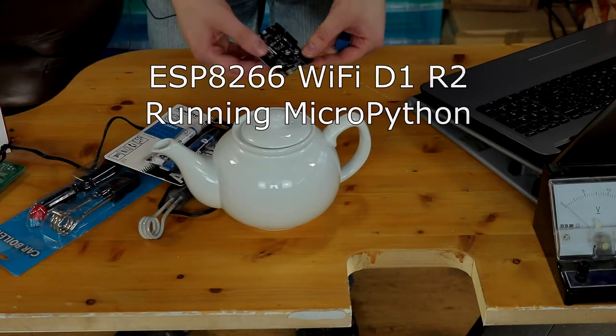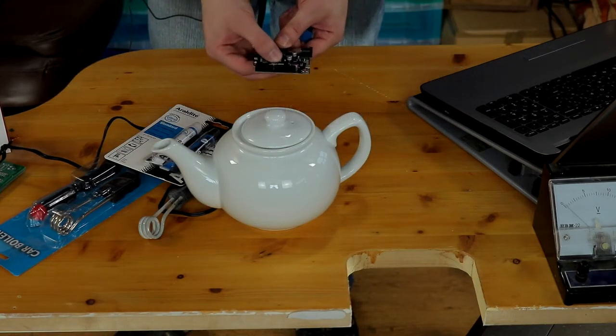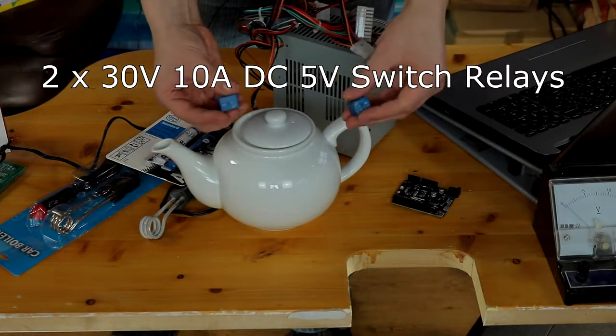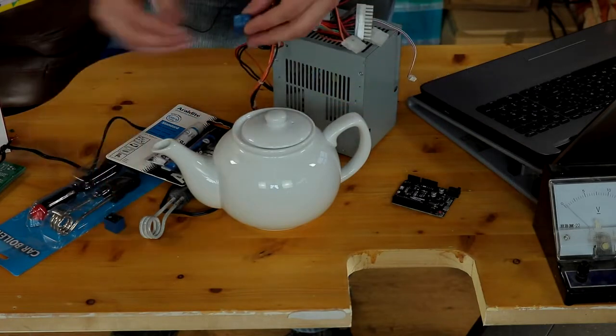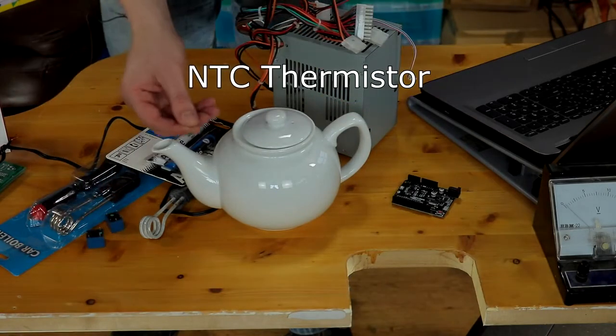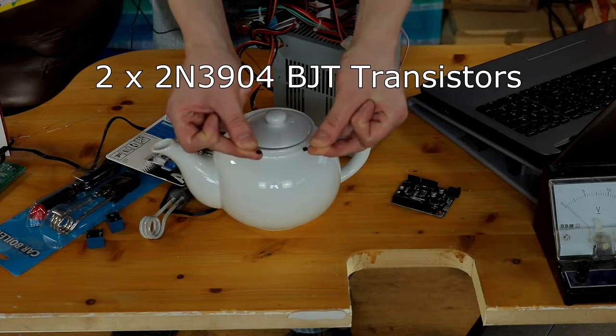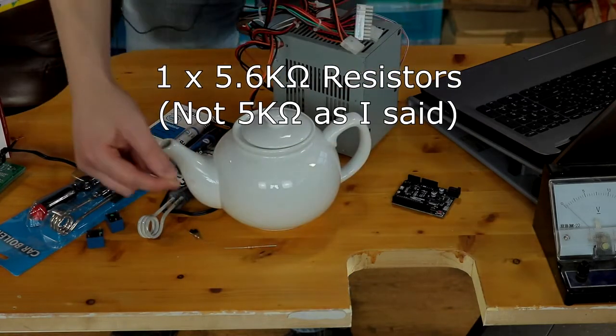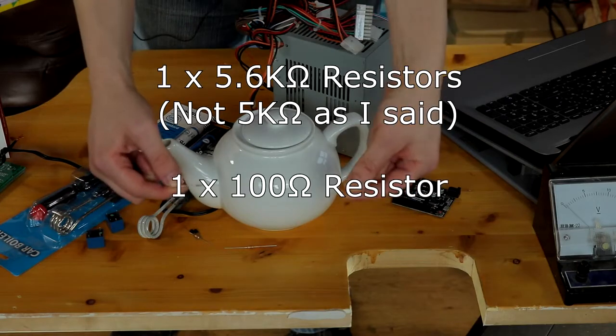An ESP8266 MicroPython board, this is a Wi-Fi D1R2 board, an ATX power supply, two relays rated at 10 amps DC maximum voltage of 30 volts DC, an NTC thermistor, two 2N3904 transistors, two 1k ohm resistors, one 5k ohm resistor and one 100 ohm resistor.